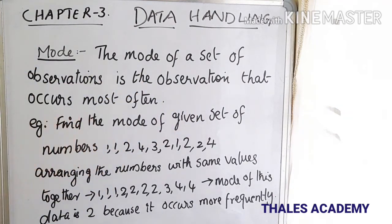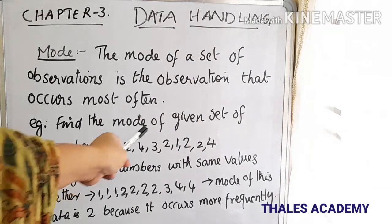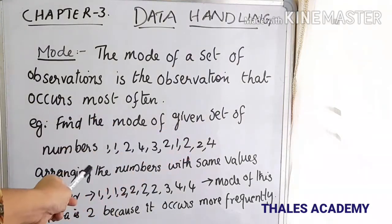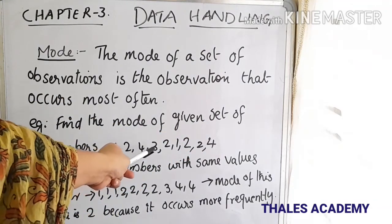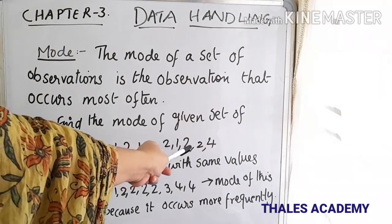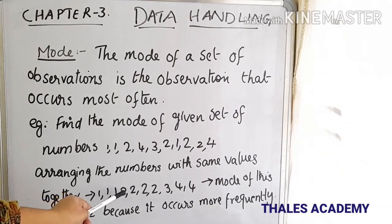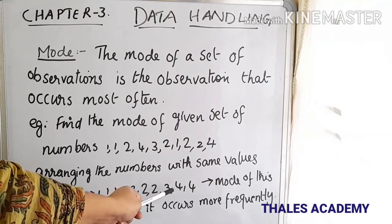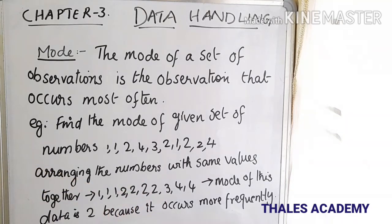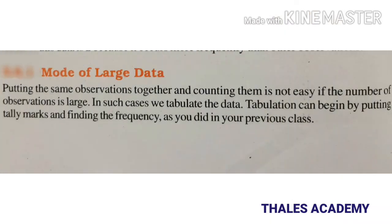For example, find the mode of the given set of numbers: 1, 1, 2, 4, 3, 2, 1, 2, 2, 4. Arranging the numbers with same values together, we get: 1, 1, 1, 1, 2, 2, 2, 2, 3, 4, 4. The mode of this data is 2 because it occurs more frequently than other observations.